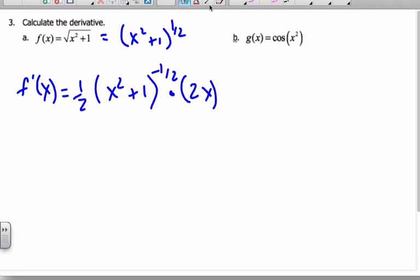If I tidy this up a little bit, I can see that the 2s cancel, and I can get x over negative square root of x squared plus 1. And there's derivative of f.